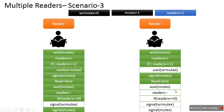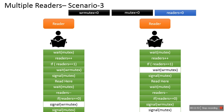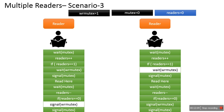Now Reader2 executes the same finishing steps. It calls wait(mutex), decreasing the mutex semaphore value. Then it decreases readers. It checks whether this is the last reader — readers==0, so the condition is fulfilled. It executes signal(wr_mutex), increasing the wr_mutex semaphore value to 1. Finally it calls signal(mutex), making it 1 as well.